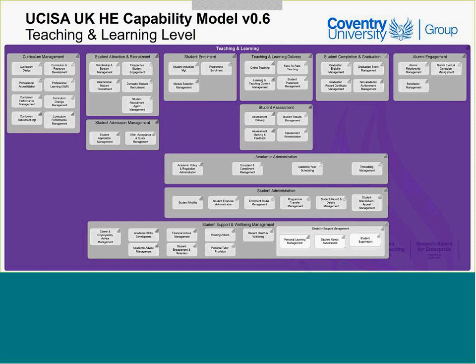The next layer — where we've probably spent the most time and which is closest to finished — is the teaching and learning value stream. I never considered there would be an issue over its name, but I've since learned that a number of universities actually refer to it as 'learning and teaching'. That debate alone gives you a feel for how complex it becomes trying to create a generic model across 150 capabilities.